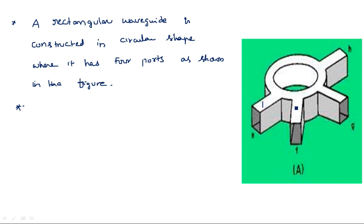Let us consider the four ports named as first, second, third, and fourth port. The construction is such that when input enters from the first port, the signal will come out from the second port only — it will not go into the third port or the fourth port. Similarly, when power enters from the second port, it goes into the third port but will not come from the fourth port or the first port.